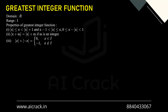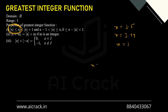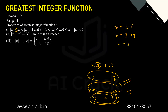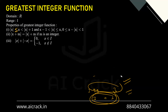For the first property, let's take three cases: x = 3.5, x = 3.99, and x = 3. The first part states x ≥ GIF(x). For x = 3.5: 3.5 ≥ 3 — satisfied. For x = 3.99: 3.99 ≥ 3 — satisfied. For x = 3: 3 = 3 — equality holds. So we have x ≥ GIF(x), with equality when x is an integer.